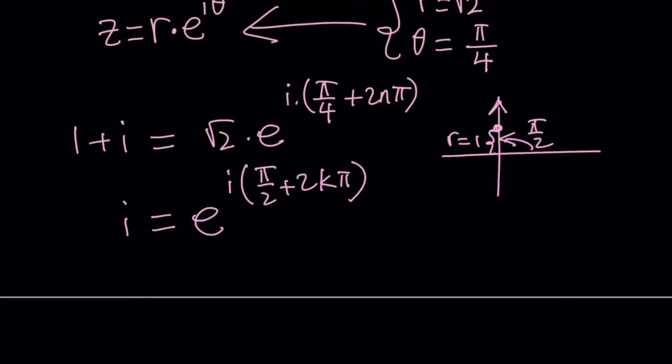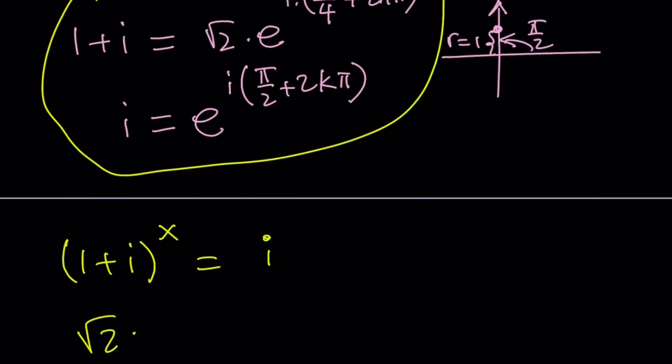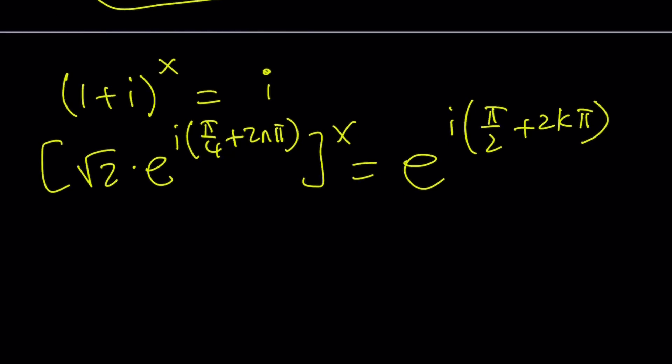Given these two things, let's put them together in our equation. We had (1 + i)^x = i. Replace 1 + i with √2·e^(i(π/4 + 2nπ)), and you're going to raise it to the power x and set it equal to e^(i(π/2 + 2kπ)). What a beautiful equation, right? When you raise it to the power x, all you have to do is multiply the exponent by x, but √2 will also be affected. Before we multiply inside by x, let's take the natural log of both sides.